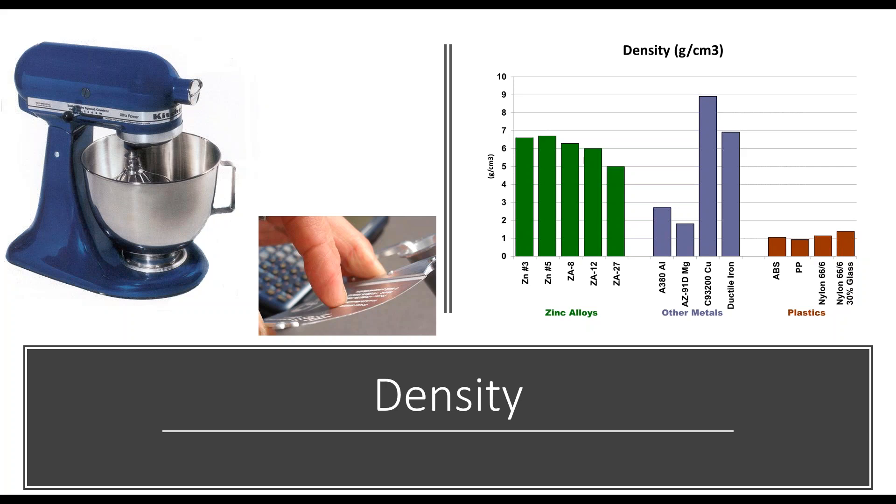In some cases, weight is a benefit as it gives a perception of quality when handling the components, such as this KitchenAid mixer. In many cases, however, zinc's higher density is not desired and it is overlooked as a potential candidate.